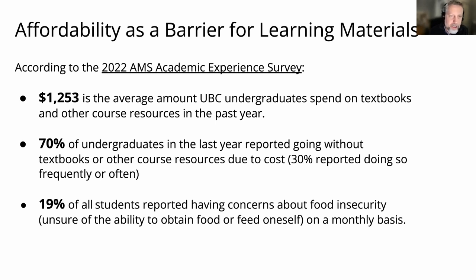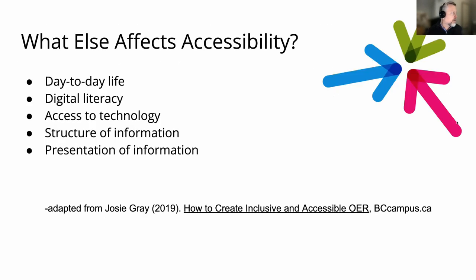The average amount UBC undergraduate students spend on course materials annually is increasing — from $893 in 2021 to $1,253 in 2022. Consistently, 60 to 70 percent of undergraduates report they did not buy textbooks because of cost, and in 2022, nearly 30% of undergraduate respondents reported they often or frequently went without textbooks or other course materials specifically due to cost. If over 25% of students in a course can't use the materials, that becomes a real teaching and learning issue.